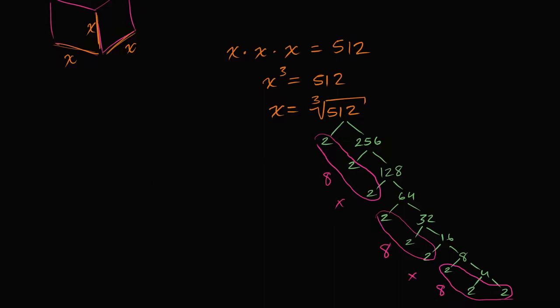So we could say that x is equal to the cube root of, instead of writing 512, I could write 8 to the third power. Now what's the cube root of something to the third power? It's just going to be this something. So x is going to be equal to 8.